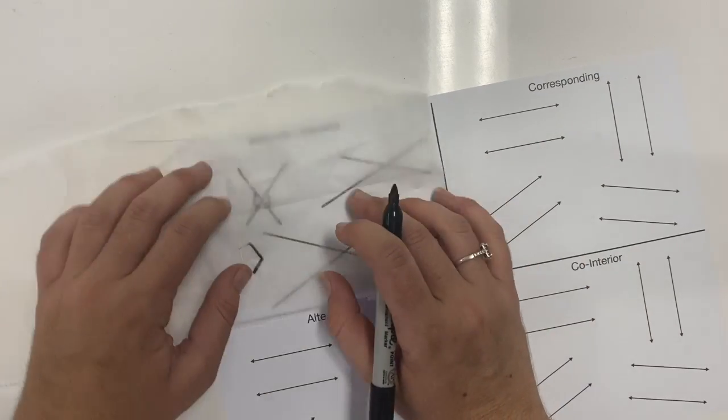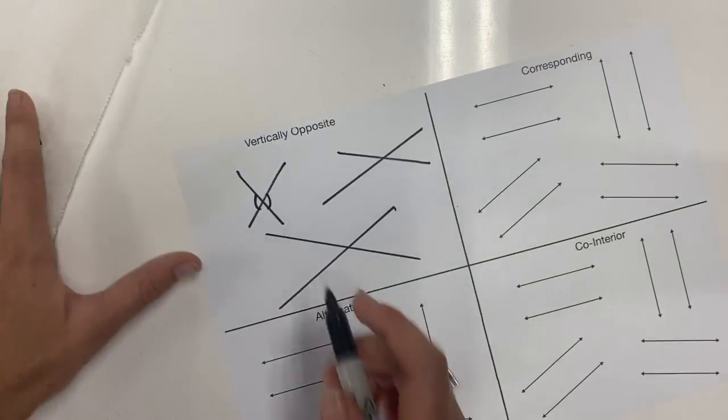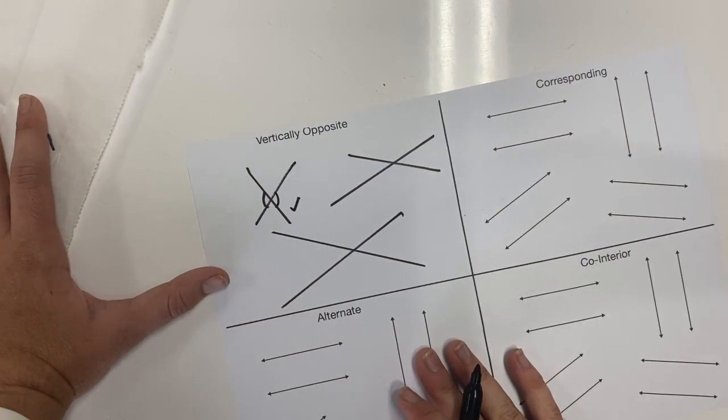these two should be the same size. So if I turn it around, there we go. The angle is the exact same size. So these two are exactly the same size.